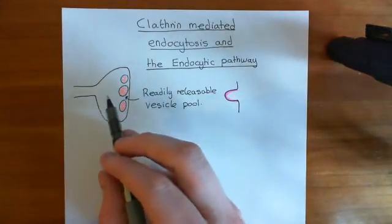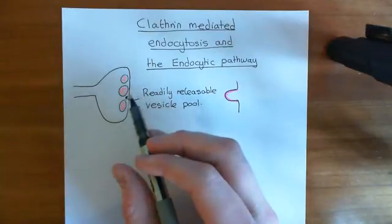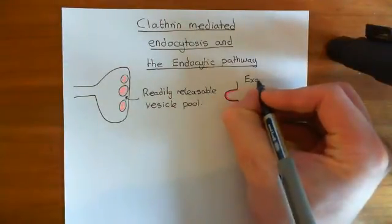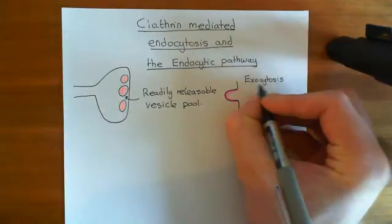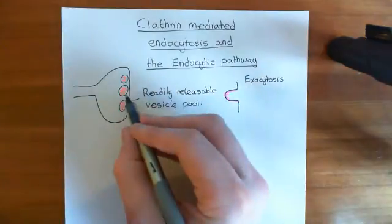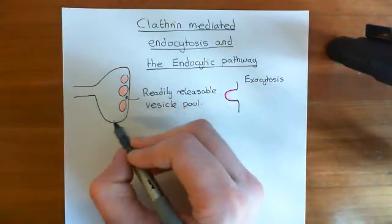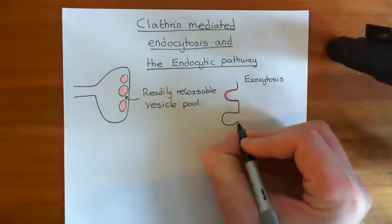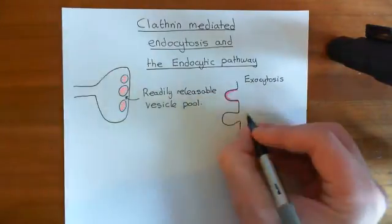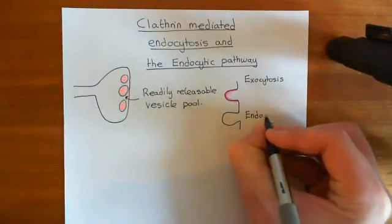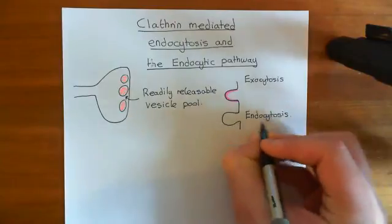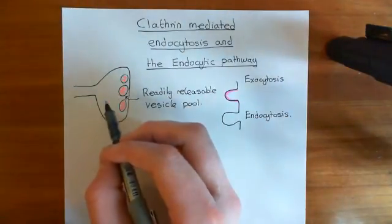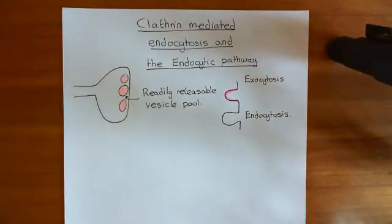At the same time, when we activate exocytosis — the release of cellular contents and fusion of membrane onto the plasma membrane — we also activate endocytosis, which is the opposite process: taking membrane back out of the plasma membrane and reforming vesicles from it. Whenever we activate exocytosis of synaptic vesicles, we also activate endocytosis to reform vesicles needed to replace the readily releasable vesicle pool which we've just released.